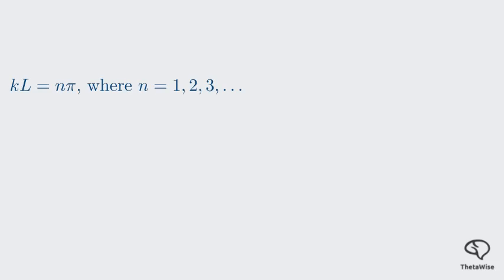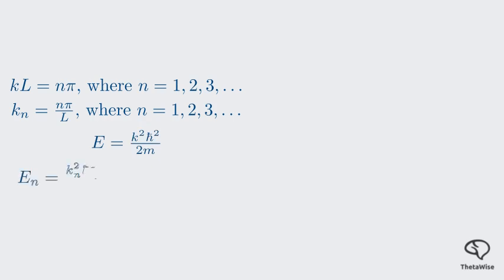Let's continue from where we left off. Our boundary conditions for the particle in a box led to the requirement that k times L equals n times π, where n is a positive integer. This gives us a formula for the allowed wavenumbers: kₙ equals nπ over L. Notice that k is now quantized. It can only take on specific, discrete values. Now, remember that the energy E is related to the wavenumber k. By plugging our quantized wavenumber kₙ back into the energy formula, we get the energy levels of the particle.